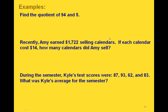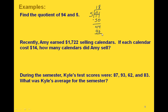Here are some examples. First we want to find the quotient of 94 and 5 — that means the 94 goes under our division symbol and the 5 goes on the outside. Comparing 5 with the 9: 5 goes into 9 one time, and 1 times 5 is 5. Then subtracting: 4 minus 0 is 4, and 9 minus 5 is 4. Now comparing 5 to 4 — 5 is bigger, so we go to the next digit: how many times does 5 go into 44? It goes in 8 times. So 8 times 5 is 40, and 4 minus 0 is 4, 4 minus 4 is 0. This would be 18 with a remainder of 4.